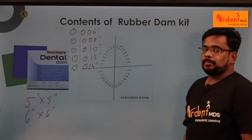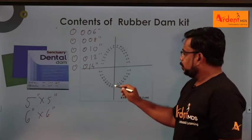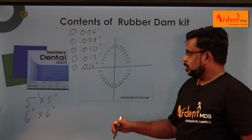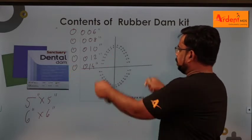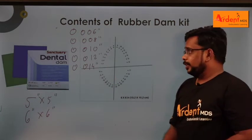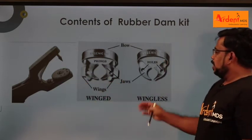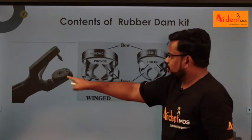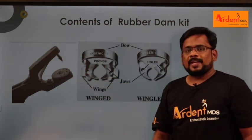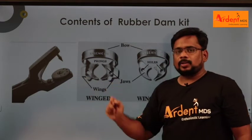The rubber dam template is used to mark the particular area where you have to place the rubber dam sheet. Place the rubber dam sheet over the template and mark the area where you are going to treat the patient. Apart from this, in a rubber dam kit you also have a rubber dam punch and rubber dam clamp. In the rubber dam punch, you have holes of various sizes.